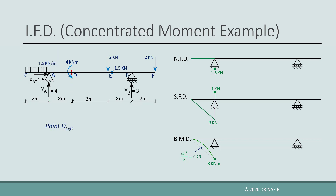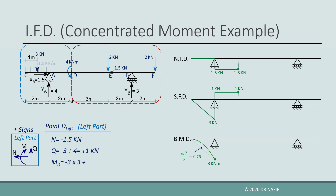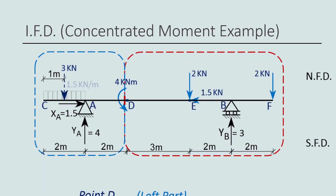Next, we move to the point just to the left of point D, using the left part. The normal force is negative 1.5 kN and the shear force is positive 1 kN, as before. The bending moment about point D is the sum of the 3 kN equivalent force multiplied by 3 meters (negative) and YA multiplied by 2 meters (positive), giving negative 1 kN·m. XA is excluded because it passes through D, and the concentrated moment at D is excluded because point D belongs to the right part.